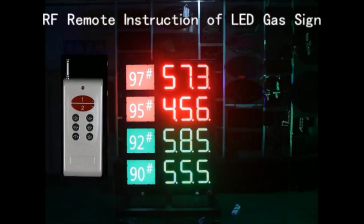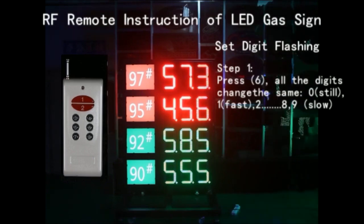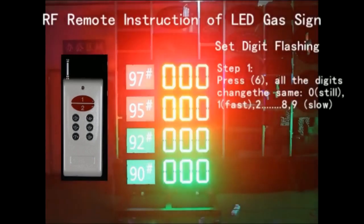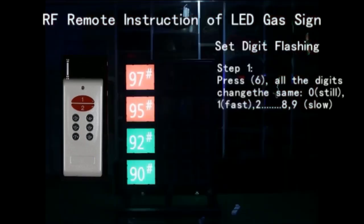New function: all digits flashing. Step 1: Press button 6 for all digits to change the same. 0 means the speed is still, digits not flashing.